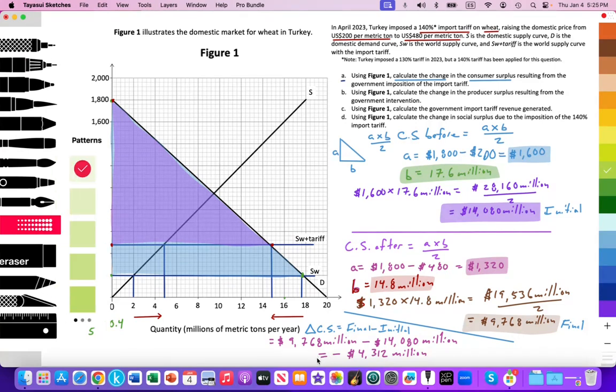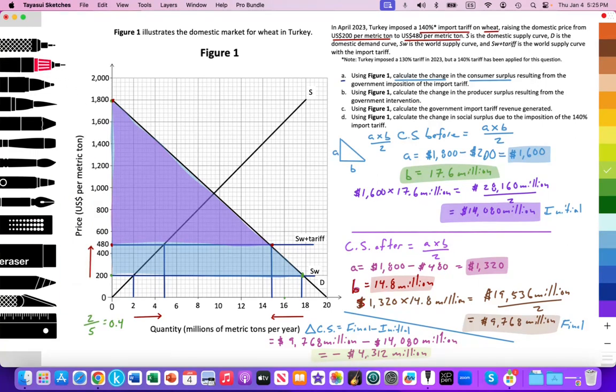We've covered and answered this question. Consumer surplus has been reduced by $4,312 million as a result of the government raising price. Consumers are negatively impacted in Turkey as a result of that 140% import tariff.